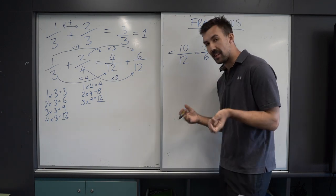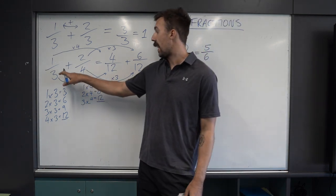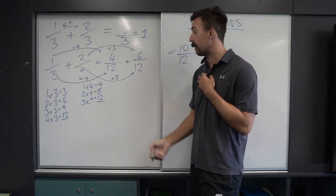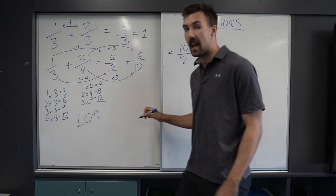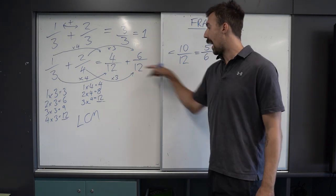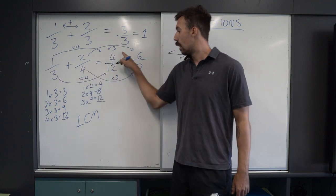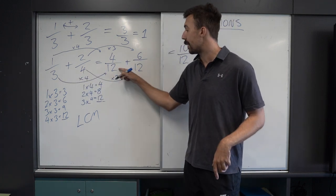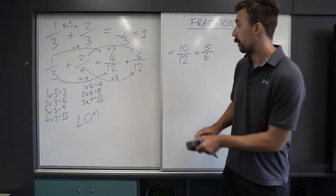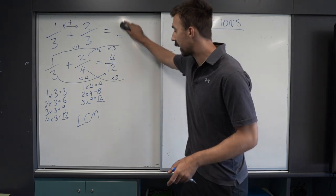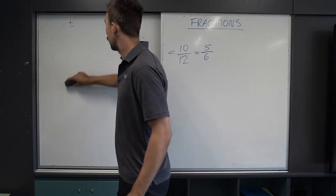And that's how you add fractions that don't have a common denominator. Step 1: find the lowest common multiple — LCM, remember that. Then you can add them. Once you add them, make sure you scale the fractions the same way for both denominator and numerator. And that's how you do it. If this is going too quick, you can always pause and rewind the video and watch it again.